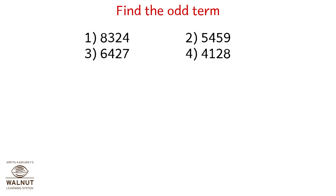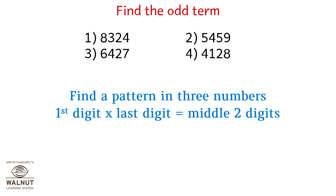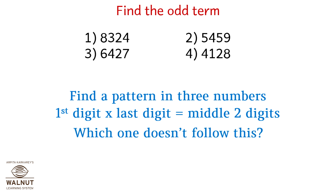Find the odd term: 8324, 5459, 6427, 4128. Find a pattern in the numbers — the first digit times the last digit equals the middle two digits. 8×4 is 32, 5×9 is 45, 6×7 is 42. But 4×8 is not 12. The correct answer is option 4: 4128.